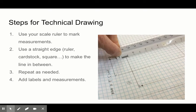Steps for technical drawing. You're going to use your scale ruler to mark measurements. Then you're going to use your straight edge to make the line. You're going to keep repeating that and you're going to add labels and measurements either as you go or at the end.